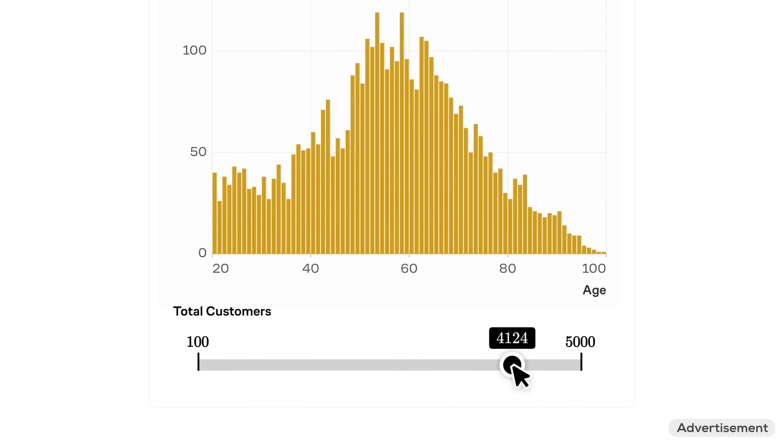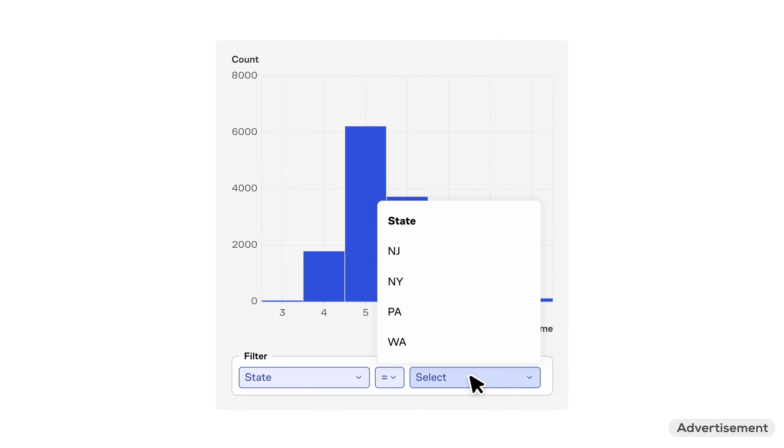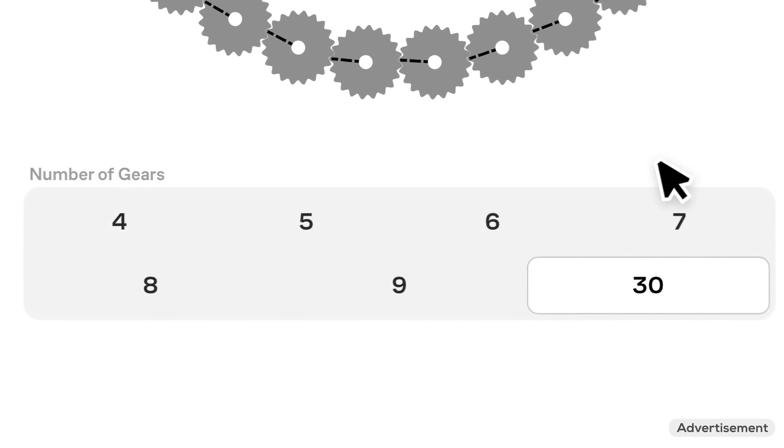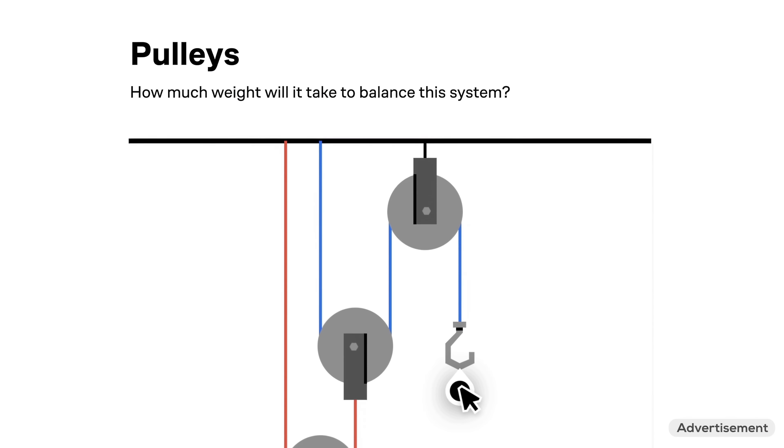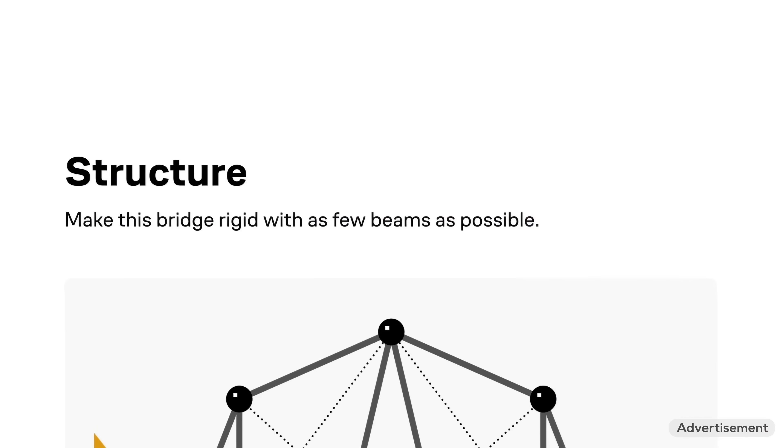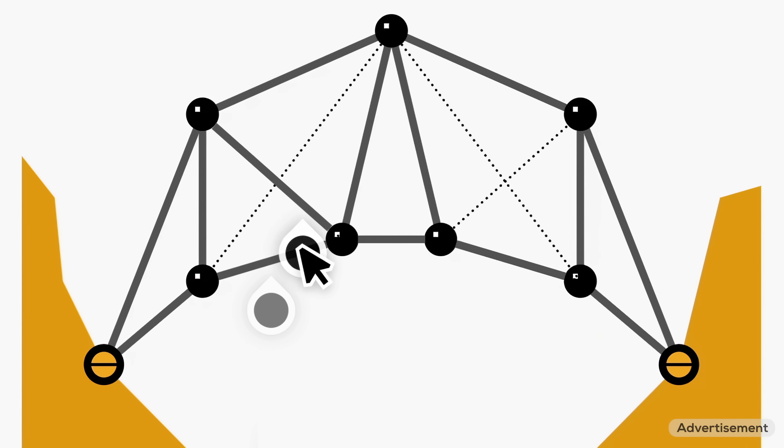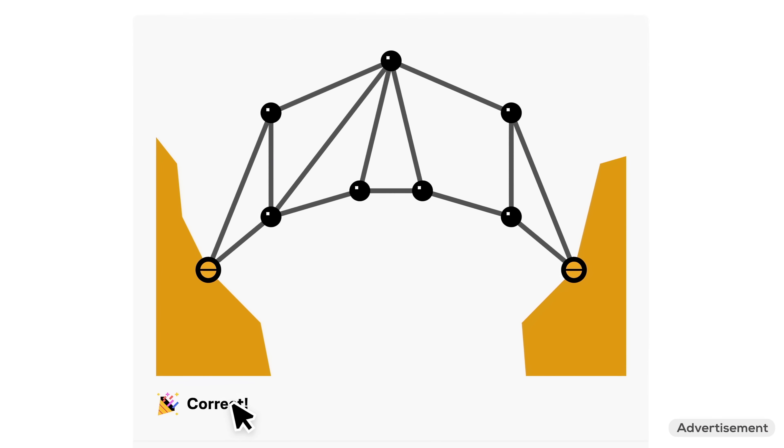On Brilliant, you'll learn through discovery, by trying things yourself. Their course on scientific thinking, for example, gets you hands-on with fascinating questions like the ones in this video. And since each course is like an immersive workshop, you'll gain knowledge of key concepts while building your intuition, helping you learn to think like a scientist.